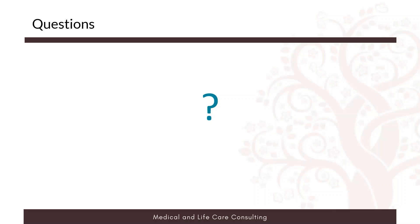You mentioned that MLCC provides a verbal opinion — can you explain the process for getting started on one? Attorneys often call asking for review of medical records or even a life care plan that was submitted. We go through the same process of confirming no conflicts of interest, then review the records and have a phone conversation regarding our evaluation of that plan or those medical records. It can usually be done fairly quickly with a quick turnaround, and if any additional services are needed, we would identify them at that time.